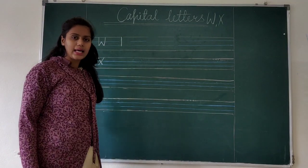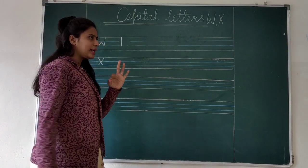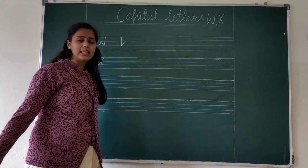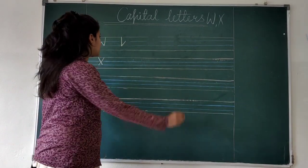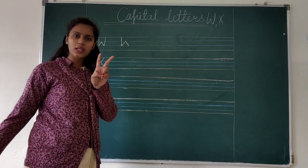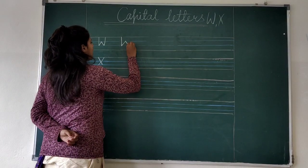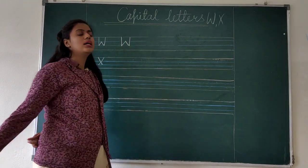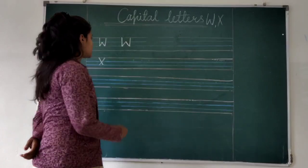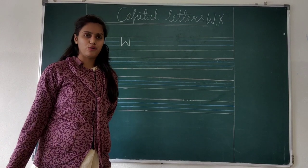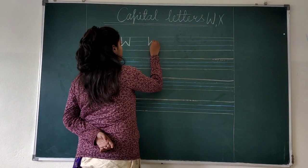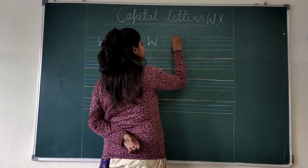One standing line in between three lines. One standing line in between two lines. Another standing line in between two lines. And then one more standing line. This is how we write W for watch. W for watch.